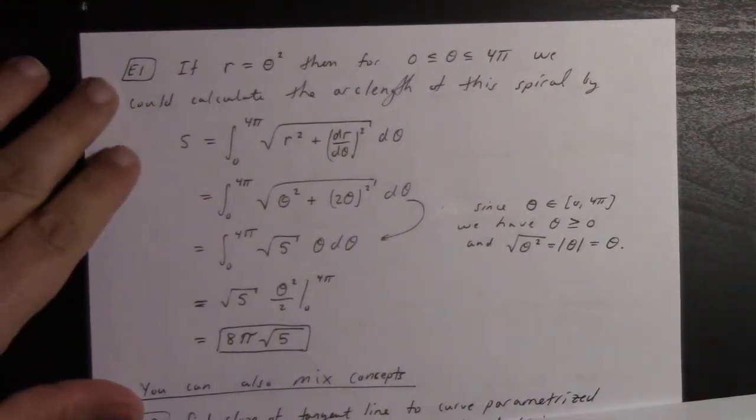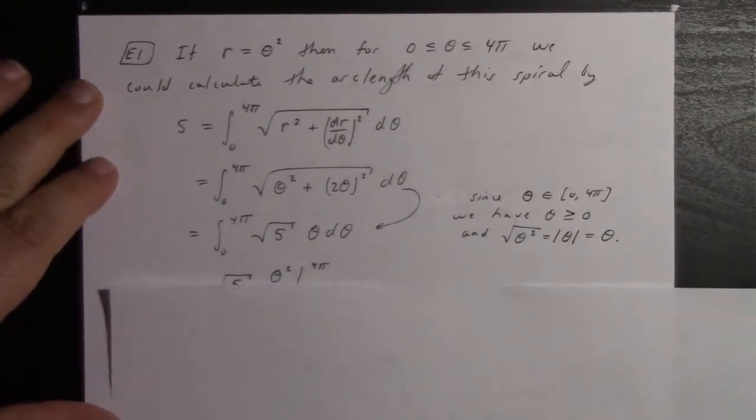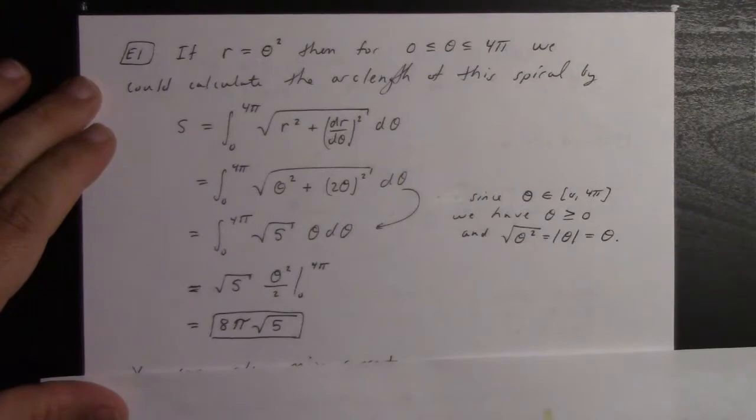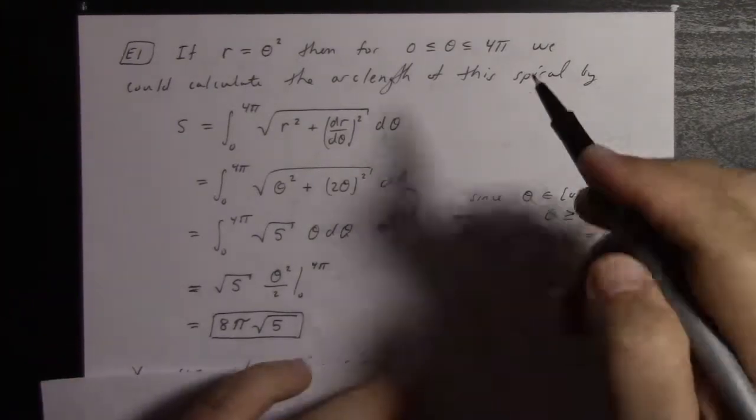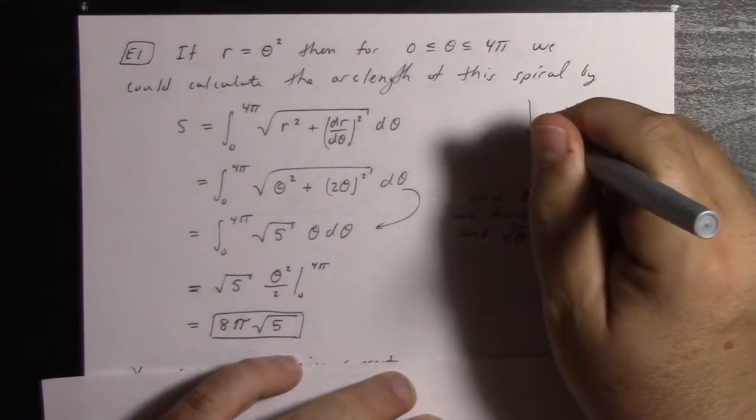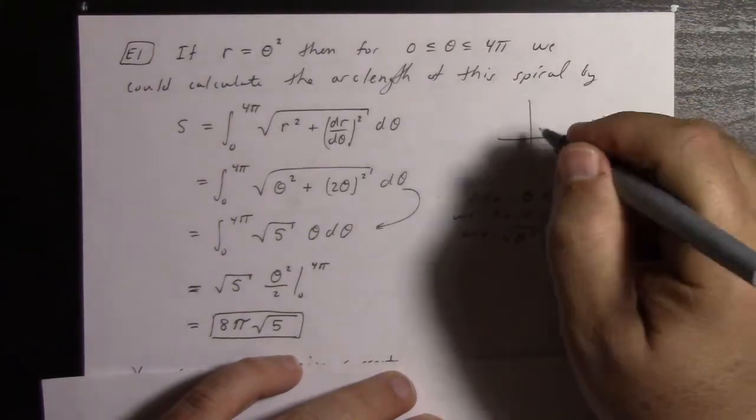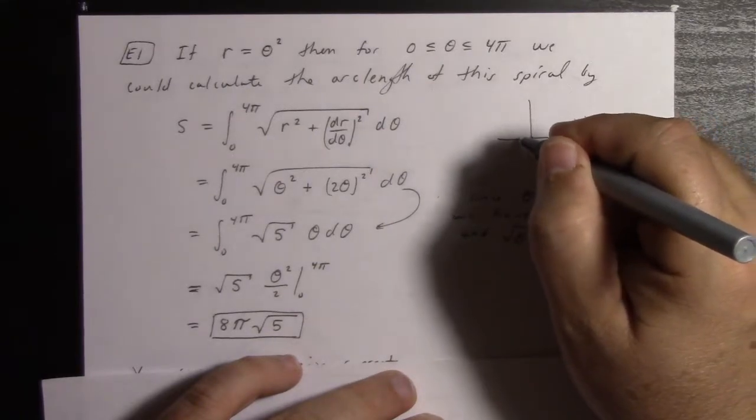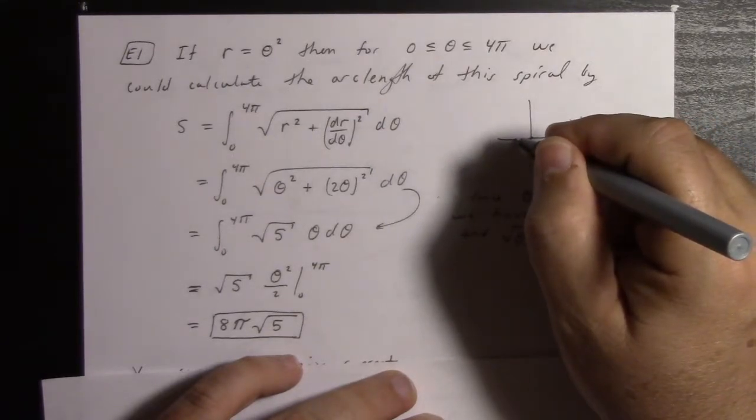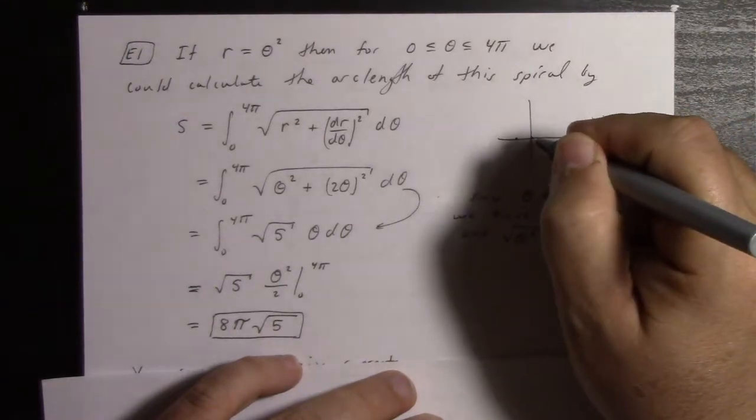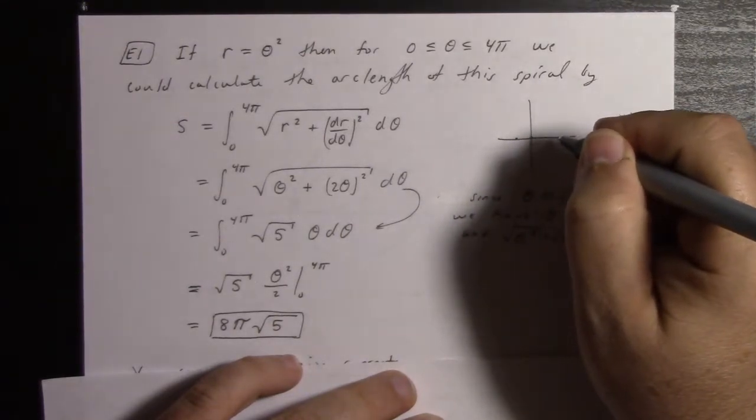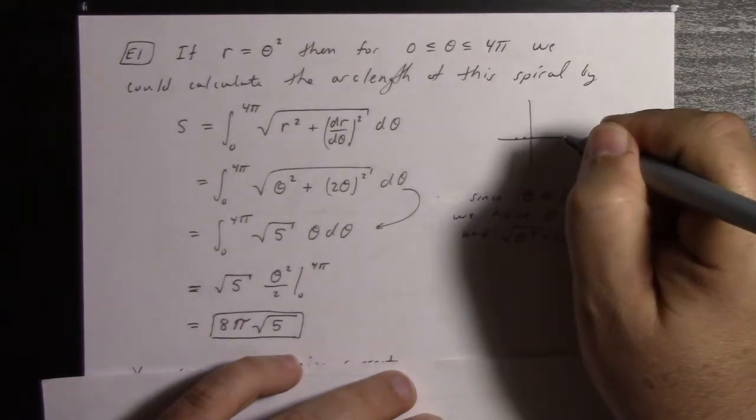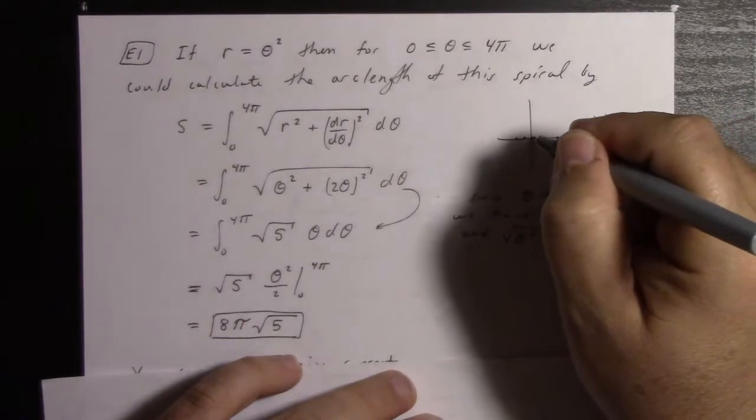For example, if you wanted to calculate the arc length of this spiral, r = θ², say from 0 to 4π. I'll even give you a picture of it. Let me foolishly attempt a picture. We start at 0. By the time we get to π², we're out to like 9. At 2π, we're out to... What's 2π²? Like 30. I'm still making that too small.